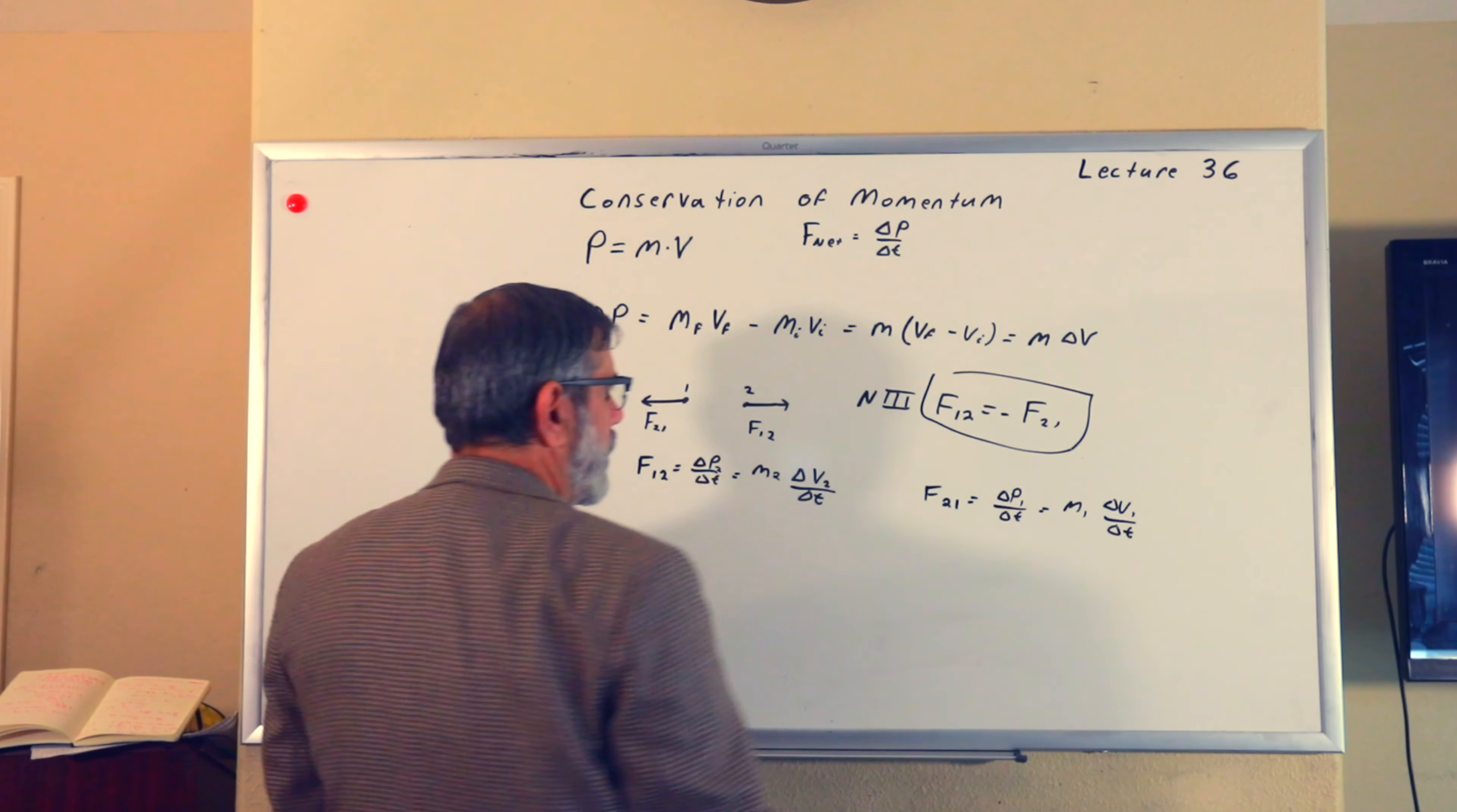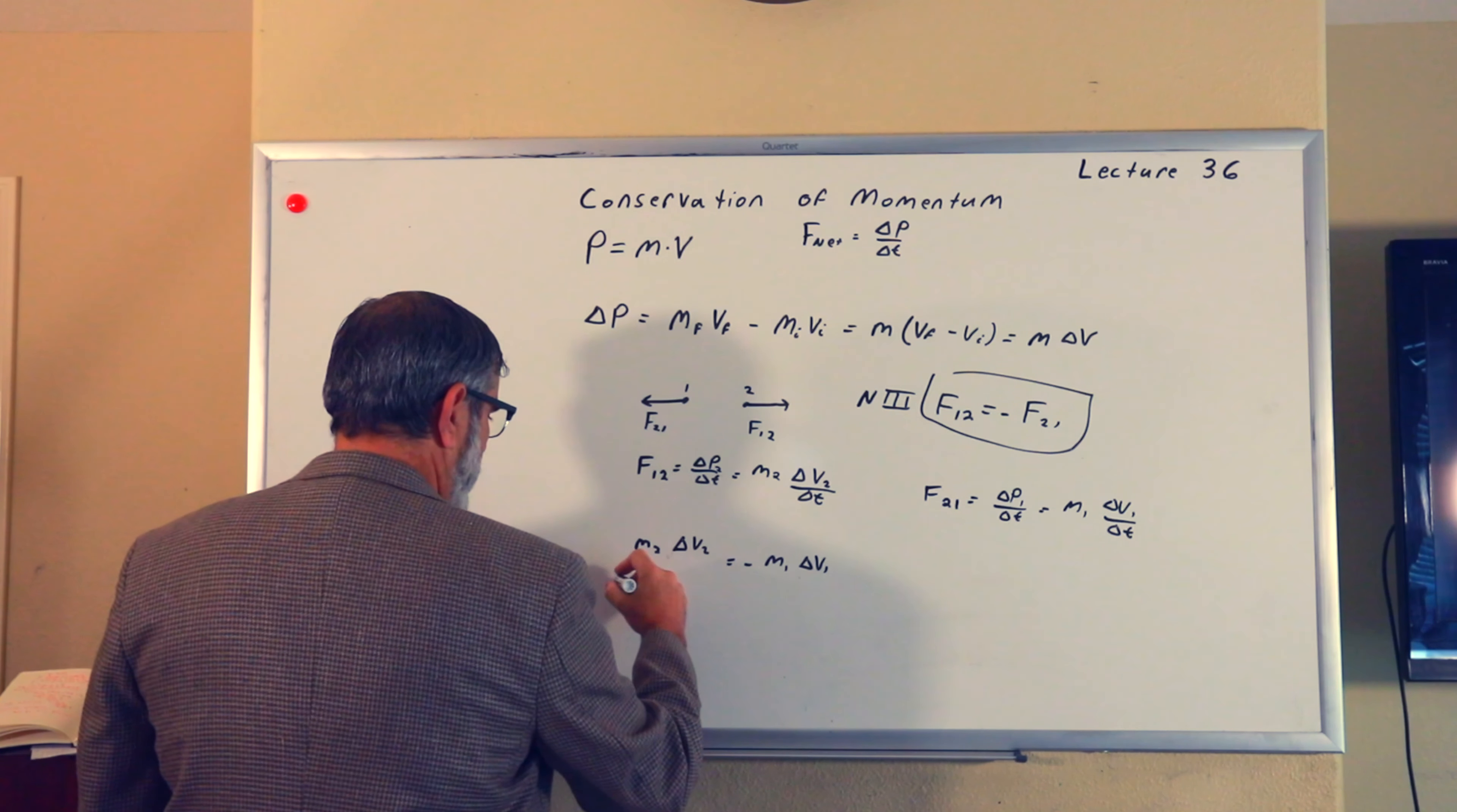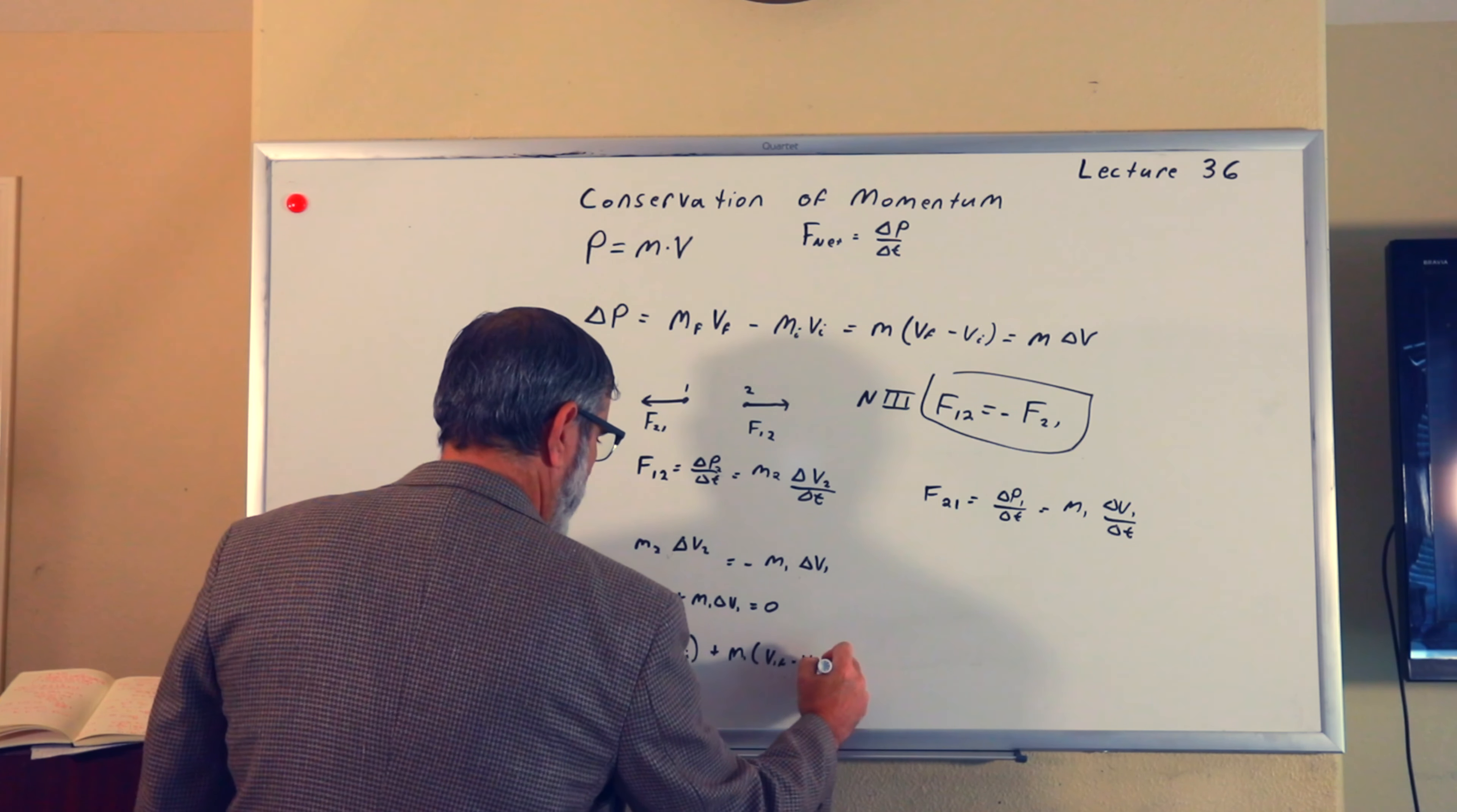We can use this equality from Newton's third law and set these two pieces equal to each other. This gives me that M_2 delta V_2 over delta T equals minus M_1 delta V_1 over delta T. We can eliminate the delta T's entirely because they are the same time interval. I'll move this onto this side so that we get M_2 delta V_2 plus M_1 delta V_1 equals zero.